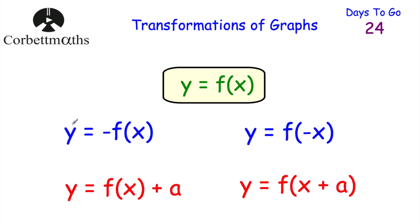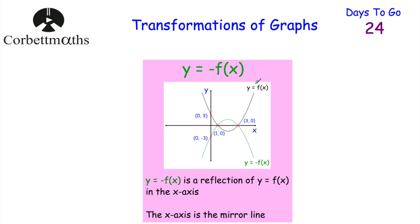Let's start with y equals minus f of x. We've got this minus sign in front of the function, so that reflects it in the x-axis. Here we have a quadratic graph in black. If we sketch y equals minus f of x, that reflects it in the x-axis — the x-axis is the mirror line. Points above the x-axis go below, points below go above, and points on the x-axis stay where they are. So the point 0, 3 would go to 0, negative 3, and a point like 10, 5 would go to 10, negative 5.